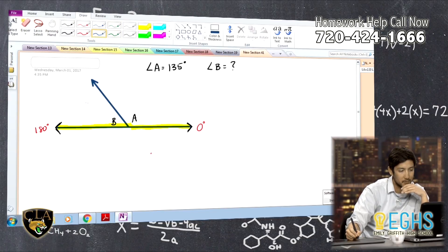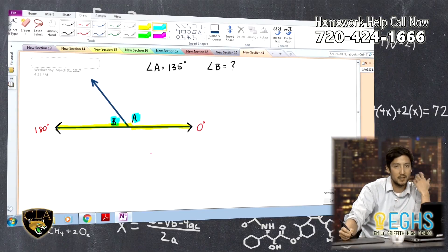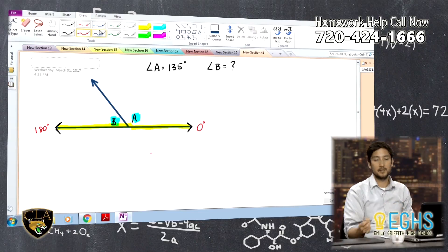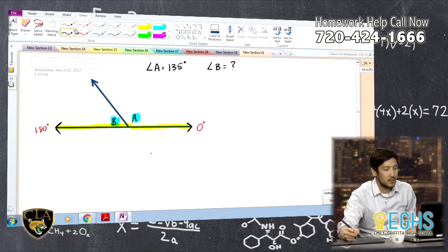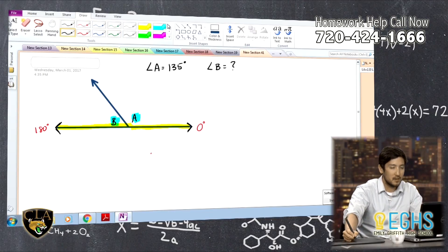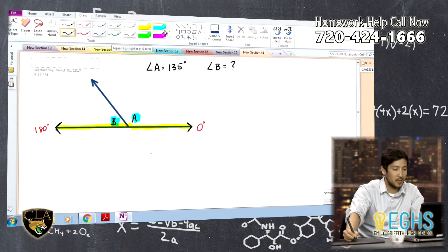So when we look at this, we're really saying that angle A right here plus angle B is going to add up to 180 degrees. So we can set up an algebraic expression for that, or an algebraic equation.